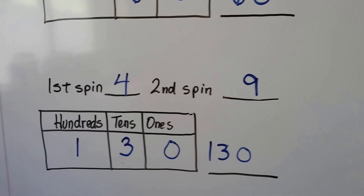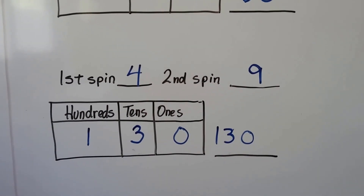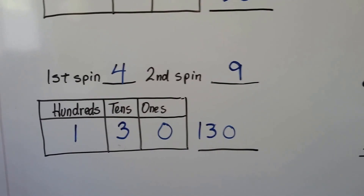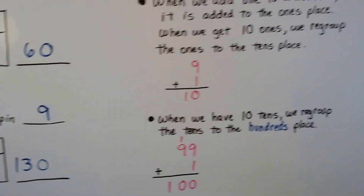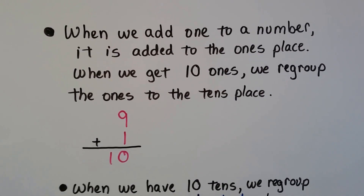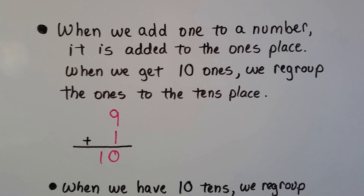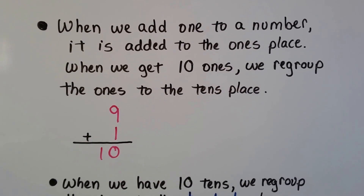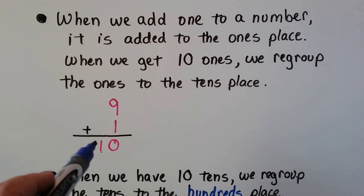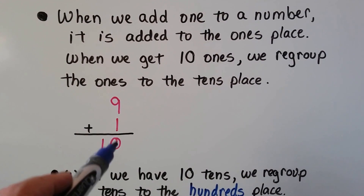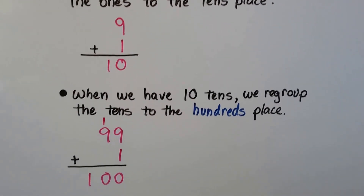You can use cards, dice, number cubes, or a spinner and try playing this adding game. When we add one to a number, it's added to the ones place. When we get ten ones, we regroup the ones to the tens place — we got too many ones, so now we have a one in the tens place.